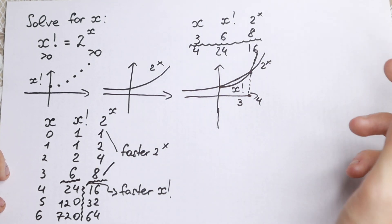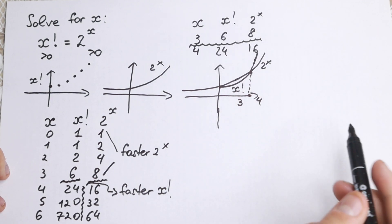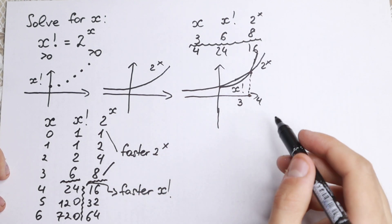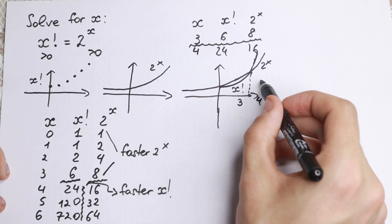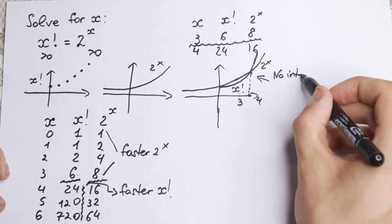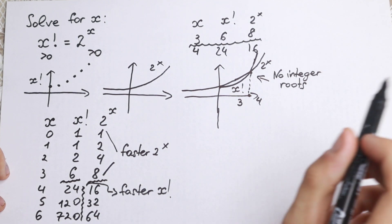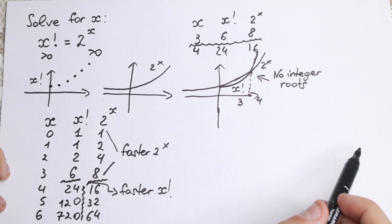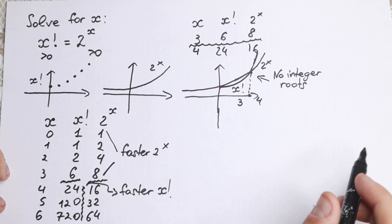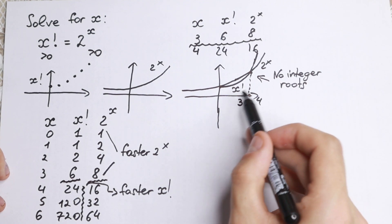I want to mention one more really interesting thing. Because 3 is an integer and 4 is an integer, but the intersection is strictly between them, we have no integer roots in this case. There are no integer roots here. Let's go further — we know that x factorial grows much faster, and I want to show you where we can find this root.